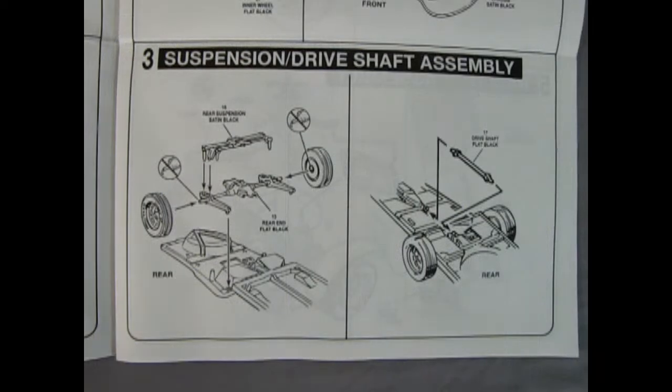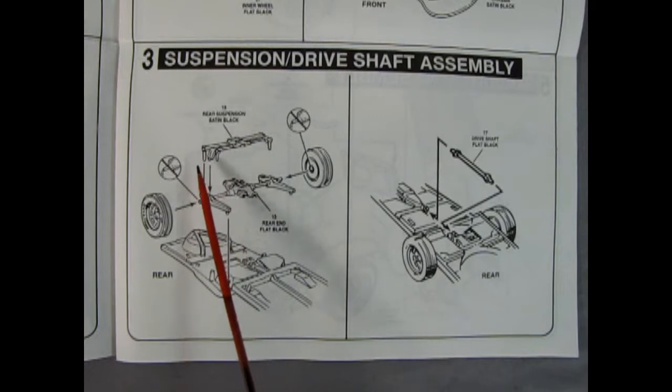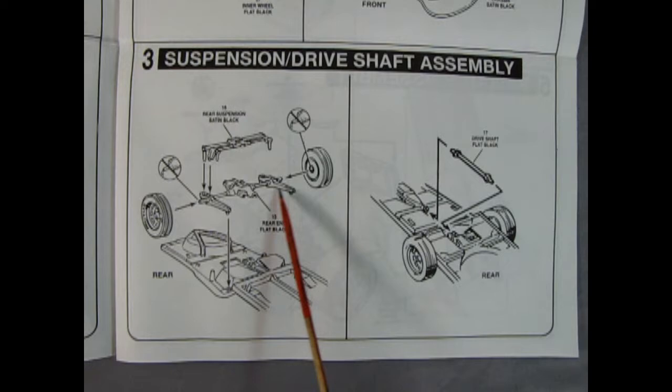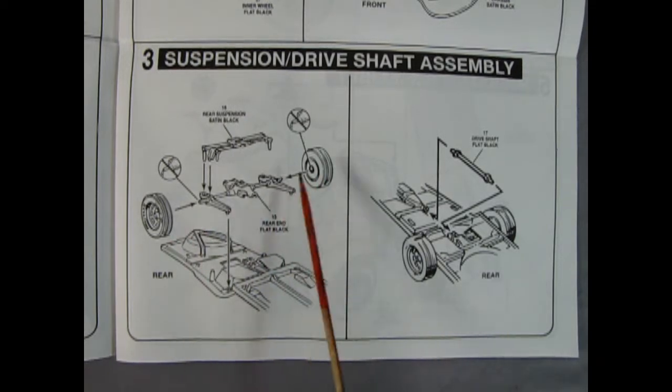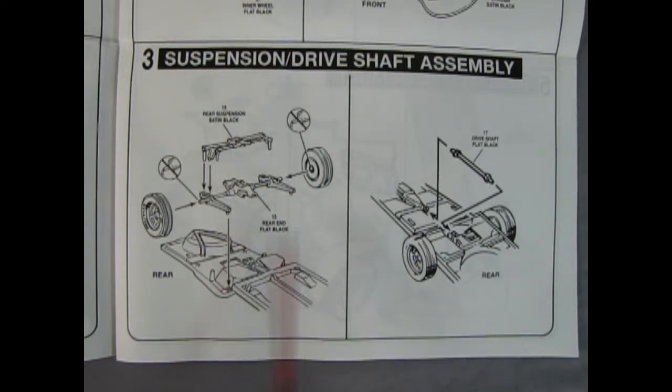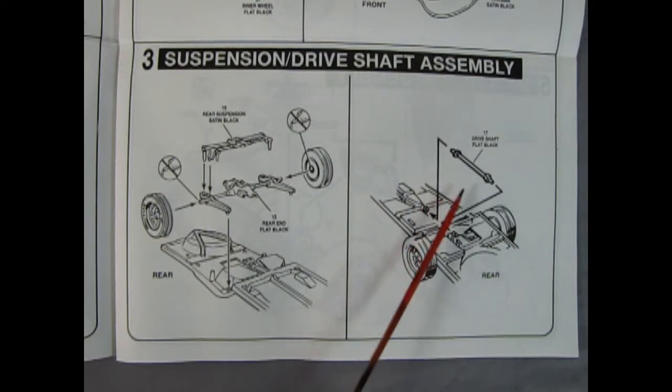Our rear suspension is also very basic. You have the upper suspension component as well as the one piece differential with the supports. Then our wheels go onto the end and that drops into the rear of the chassis, and then it's all tied together with the drive shaft.